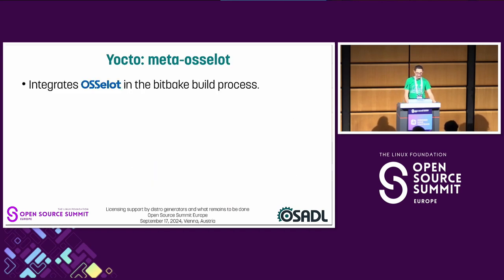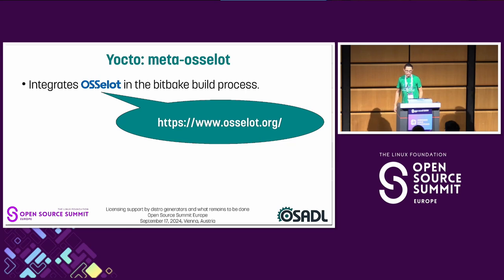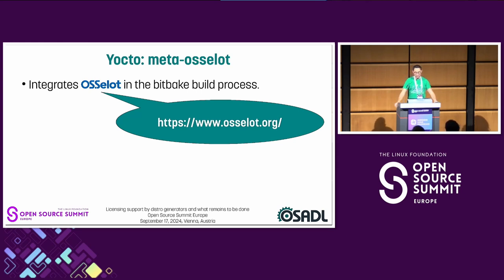That brings me to a layer called meta-ocelot, integrating a project called Ocelot. Check out the project page at www.ocelot.org. The main idea is to build up a database with license compliance material for commonly used open source packages — not just scanning data, but really reviewed and curated data. You could look up if your package is already there and get the data instead of recreating the same data over and over again. That is the main idea of the Ocelot project.